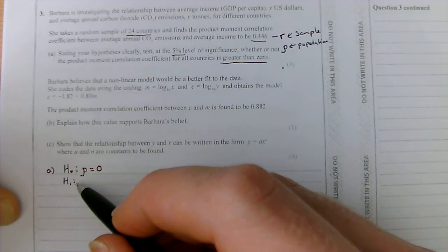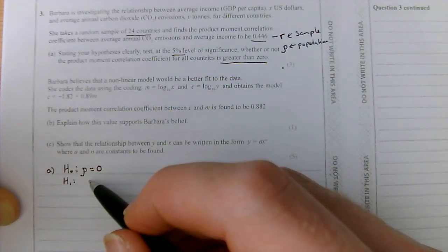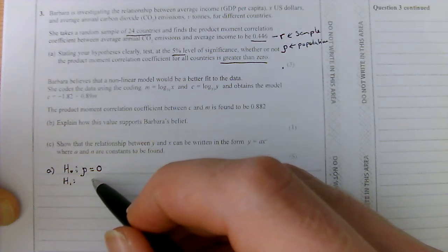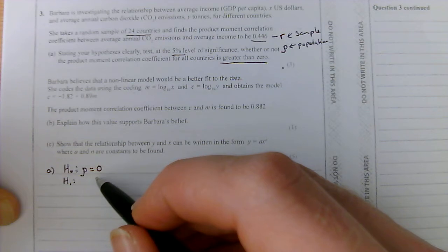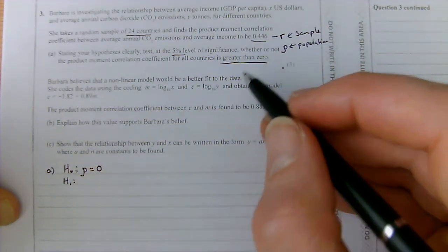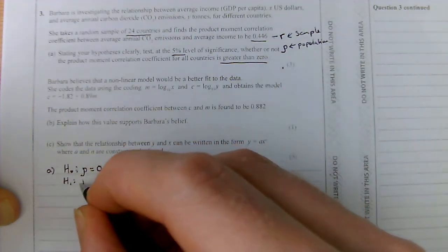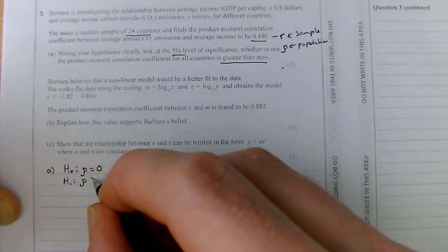The alternative hypothesis can take one of three forms. It can either be that the correlation is less than 0, that the correlation is greater than 0, or that the correlation is not equal to 0, in which case we would have a two-tailed test. Here the question is very simple for us. It's greater than 0, so we're looking at rho is greater than 0.